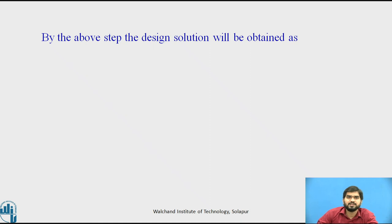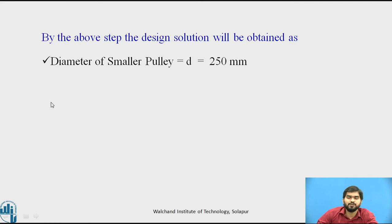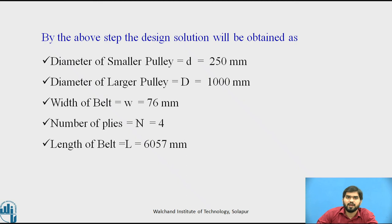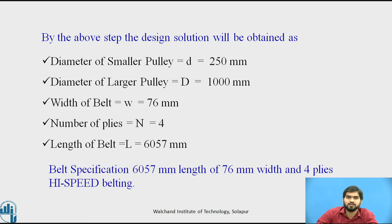From the above steps, the design solution is: smaller pulley diameter d = 250 mm, larger pulley diameter D = 1000 mm, belt width W = 76 mm, number of plies n = 4, and belt length = 6057 mm. The complete specification of the belt is: 6057 mm length × 76 mm width × 4-ply high-speed belting.